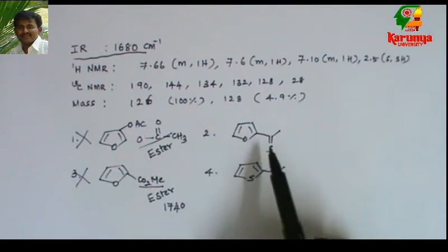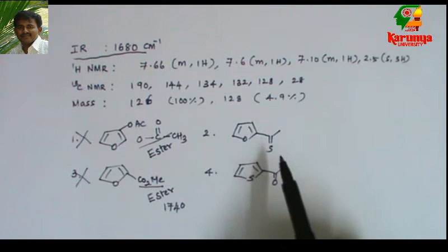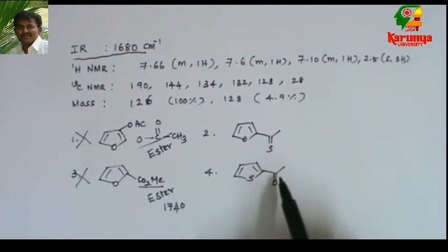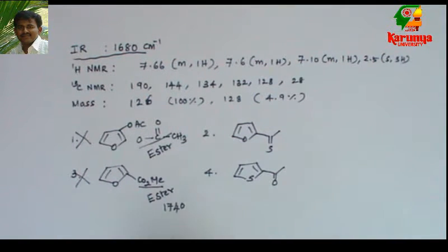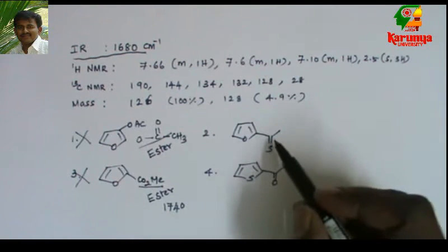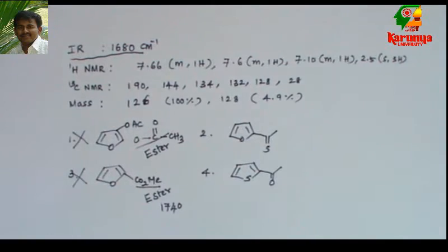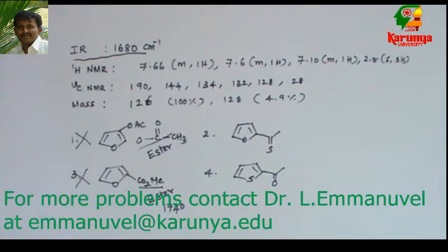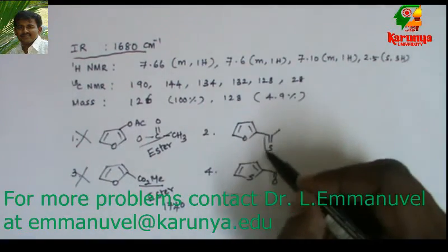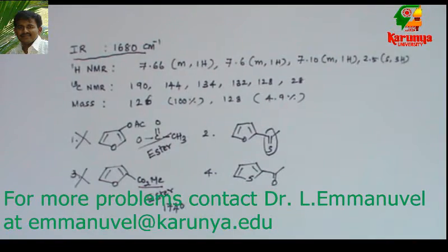Then let us go for the second and third options. The molecular weight will match 126 and 128 — both are isomers. The problem is whether it is thioketone or ketone, furan or thiophene — that is, whether the oxygen is in the side chain or in the ring.